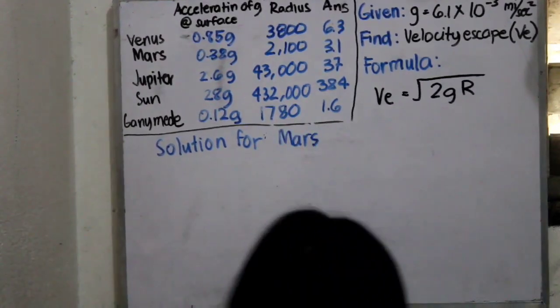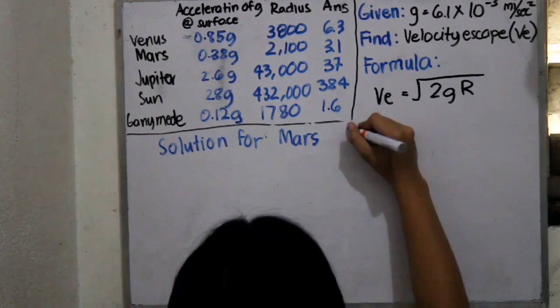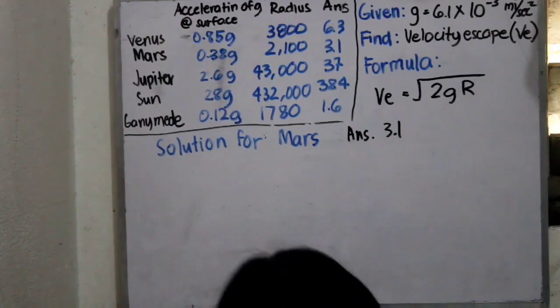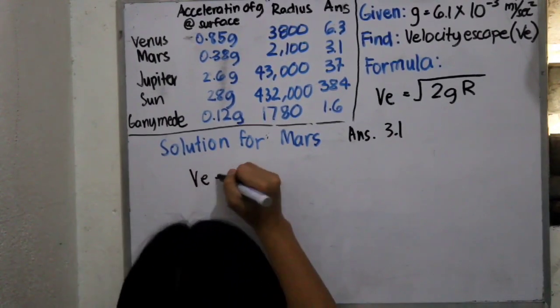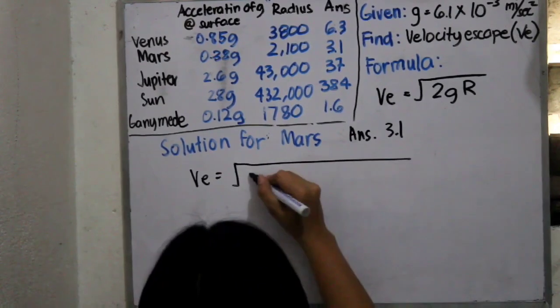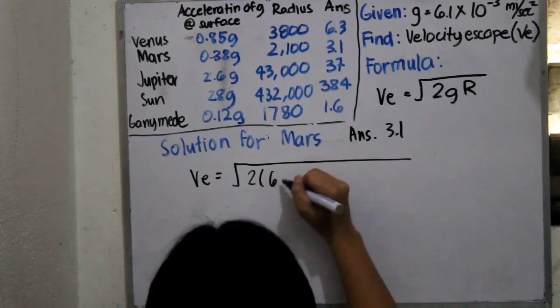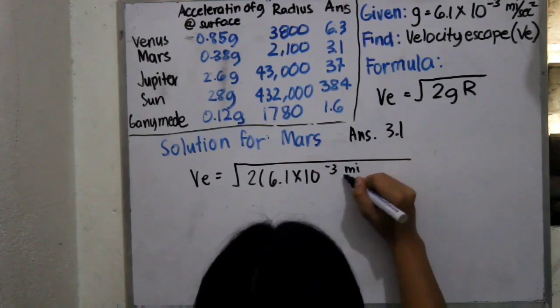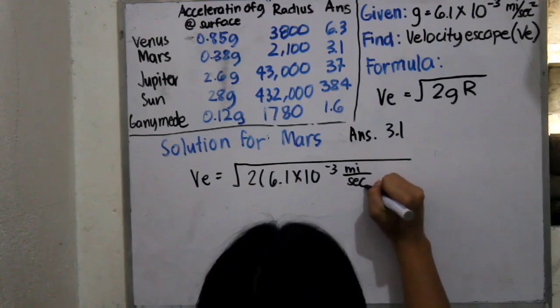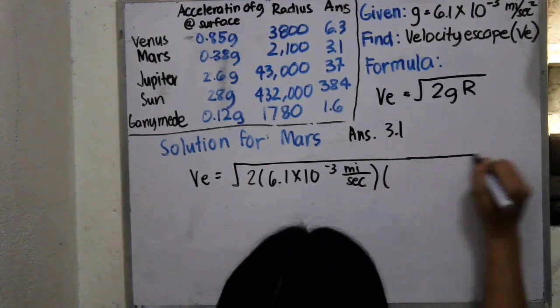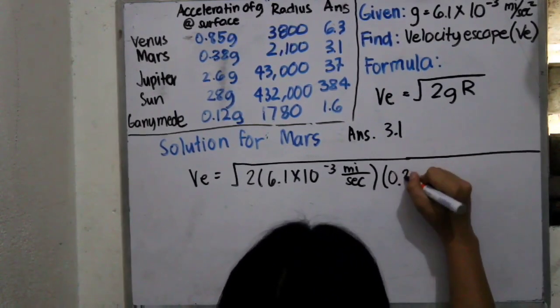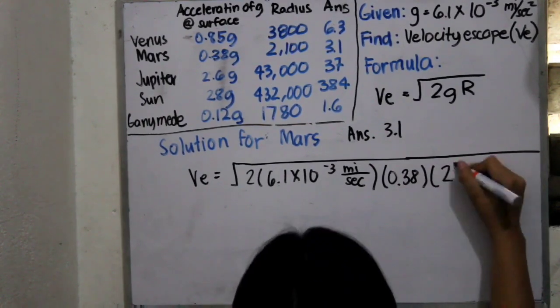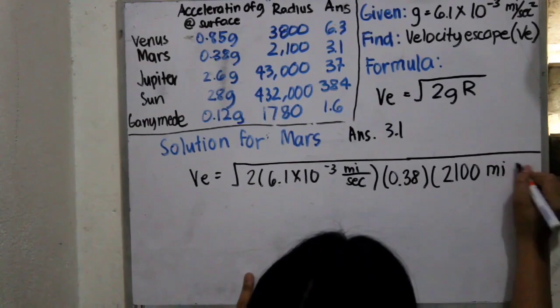Let's continue our solving. Next is the solution for Mars, which we should arrive in the answer of 3.1. So, VE is equals to square root of 2 multiplied by 6.1 by 10 raised to negative 3, which is our gravity, multiplied by the acceleration of g at the surface, which is 0.38. And also, the radius, which is 2,100 miles.